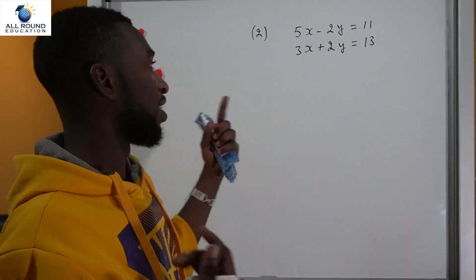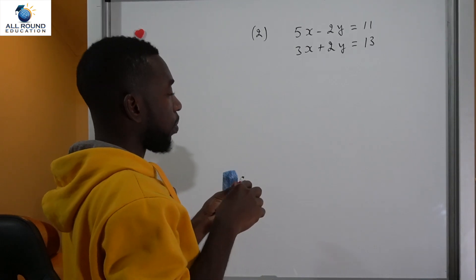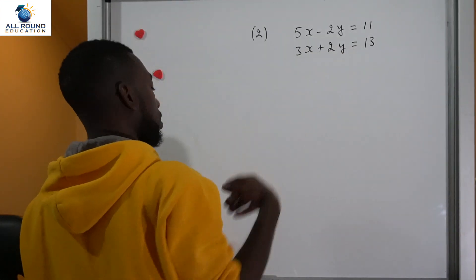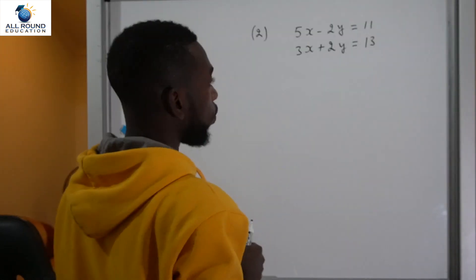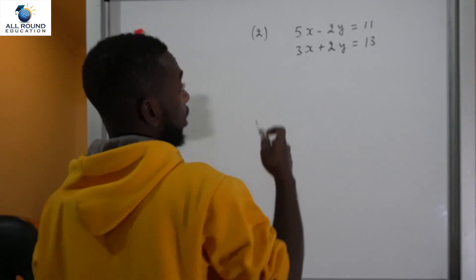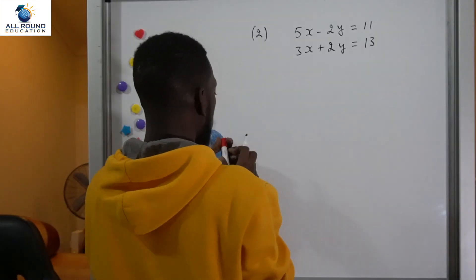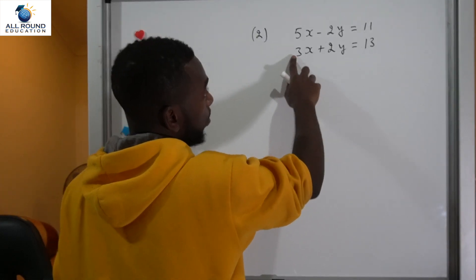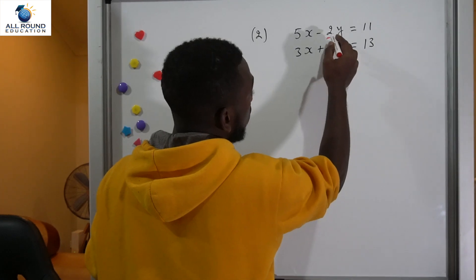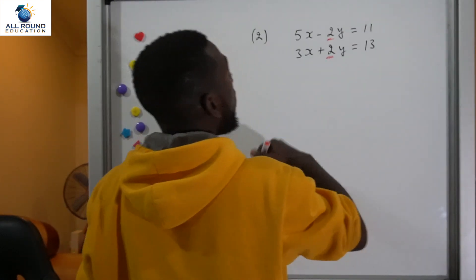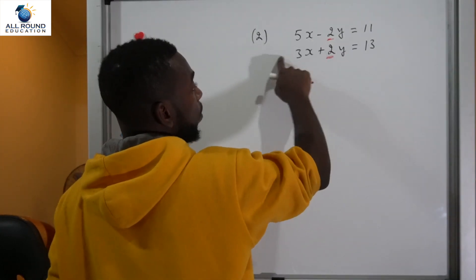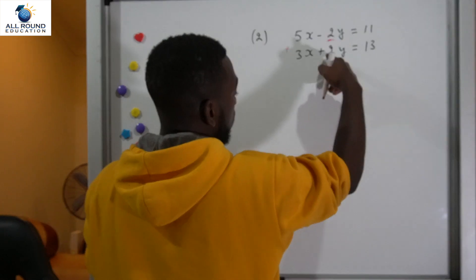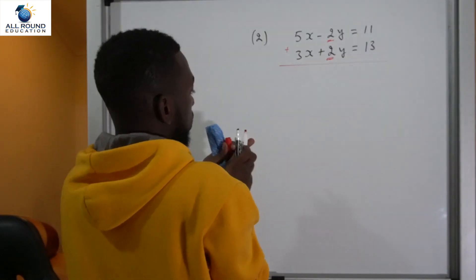For our second example, we've got 5x minus 2y equals 11 and 3x plus 2y equals 13. We are trying to find x and y that satisfy both equations. Using the elimination method, notice it would be hard to eliminate x here. However, since we have 2y and 2y with opposite signs, we are going to add the equations rather than subtract, because the plus and minus will cancel each other.